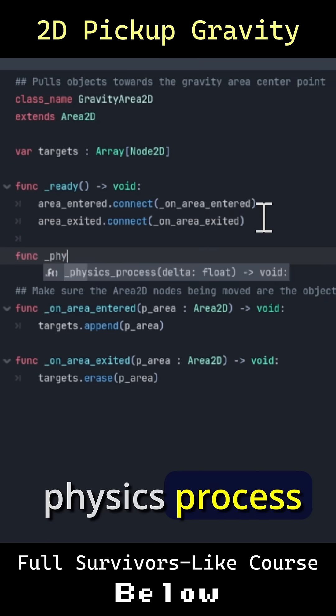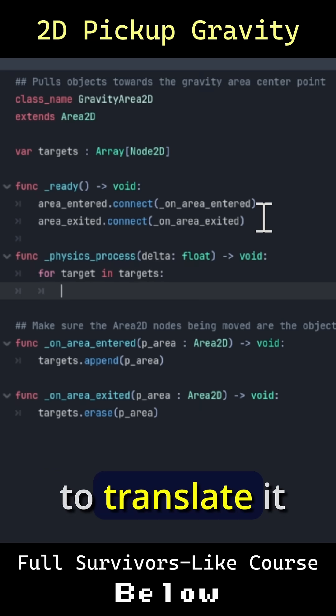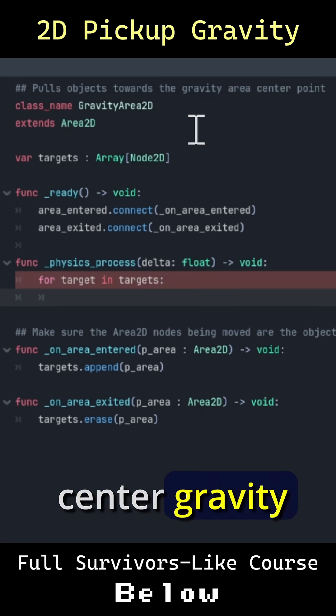Let's say function _physics_process, and we'll say for target in targets we want to translate it across the screen towards the center gravity area point.